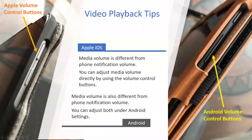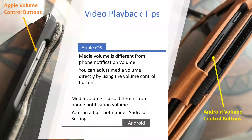In the ministry, it is important to ensure that your videos play back with enough volume so the householder can hear it. Note that with both Apple and Android, the volume control for device notification sounds is different than the volume control for media playback. Understanding this distinction will help us ensure videos can be heard in the ministry but are silent during meetings if accidentally triggered.